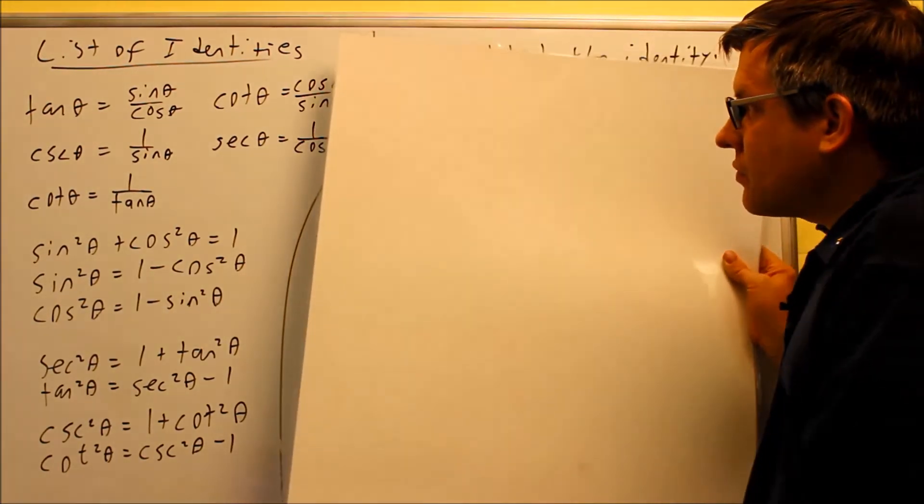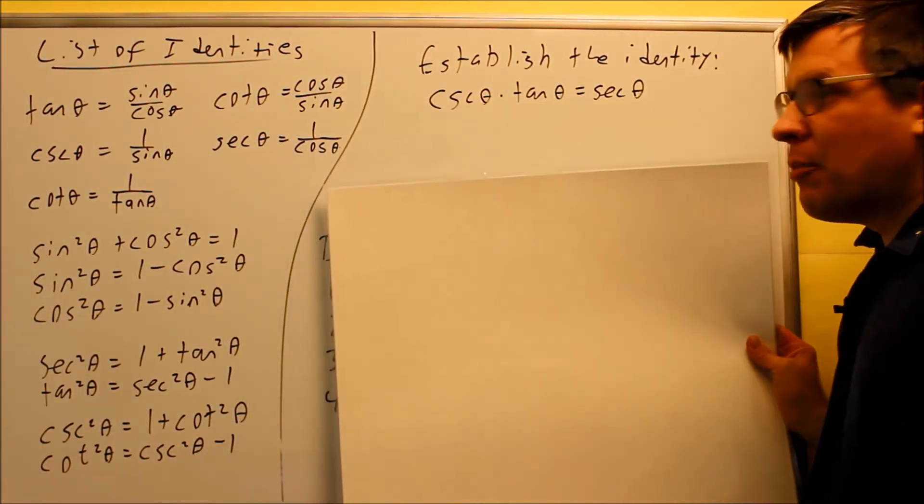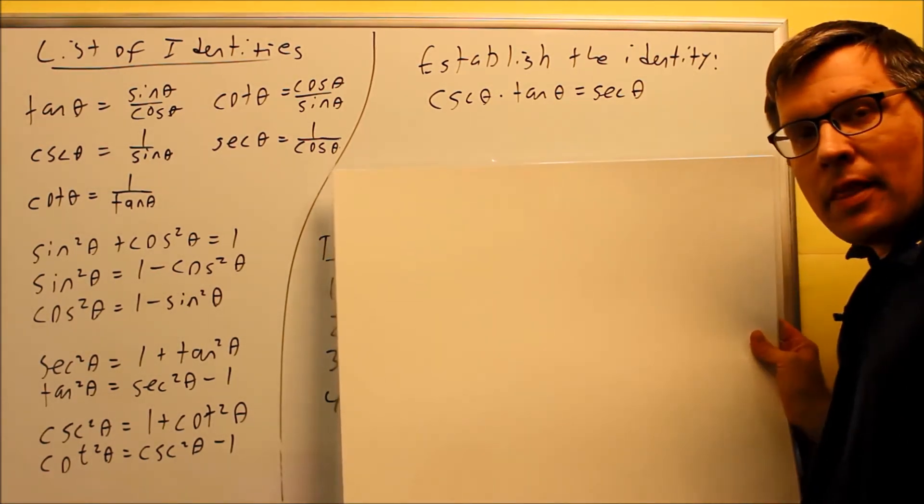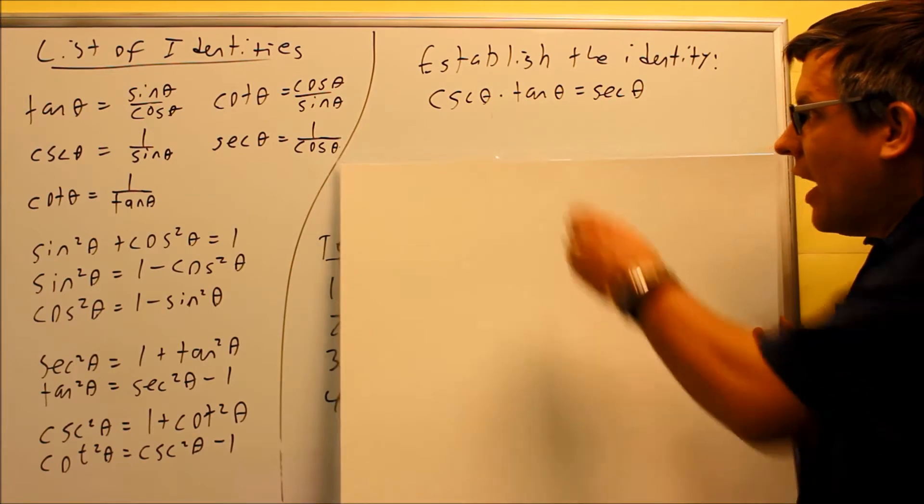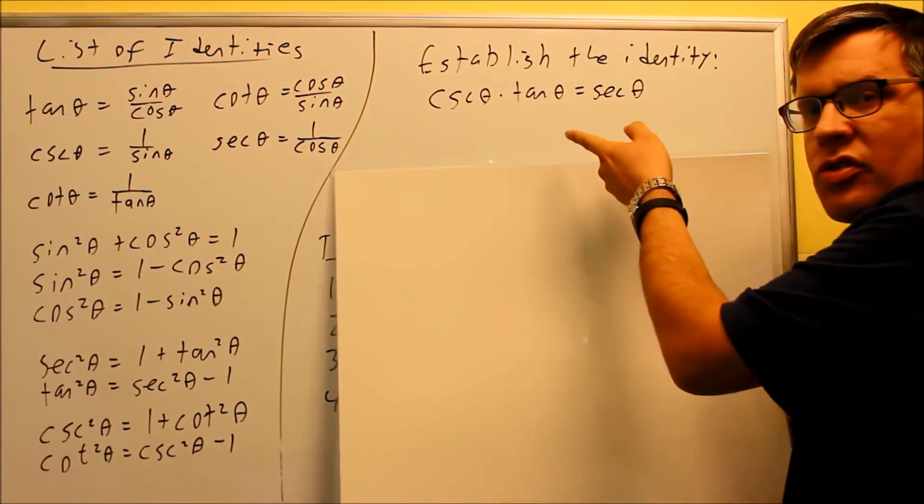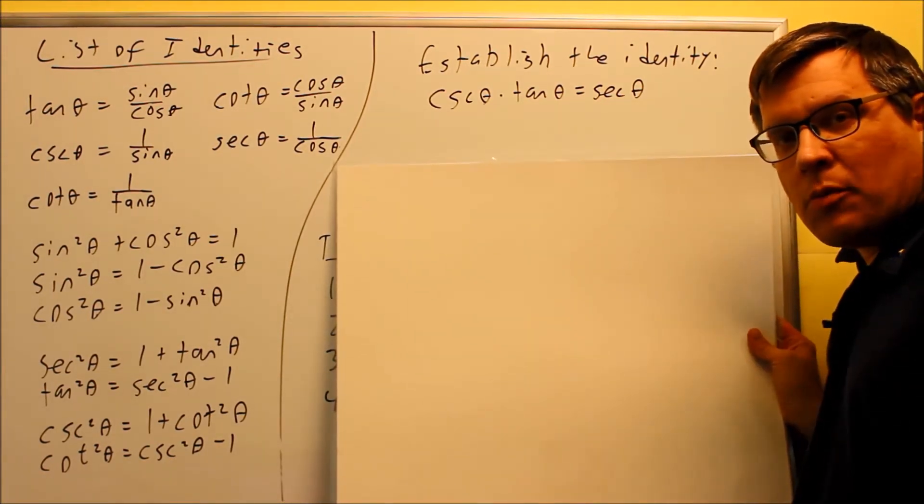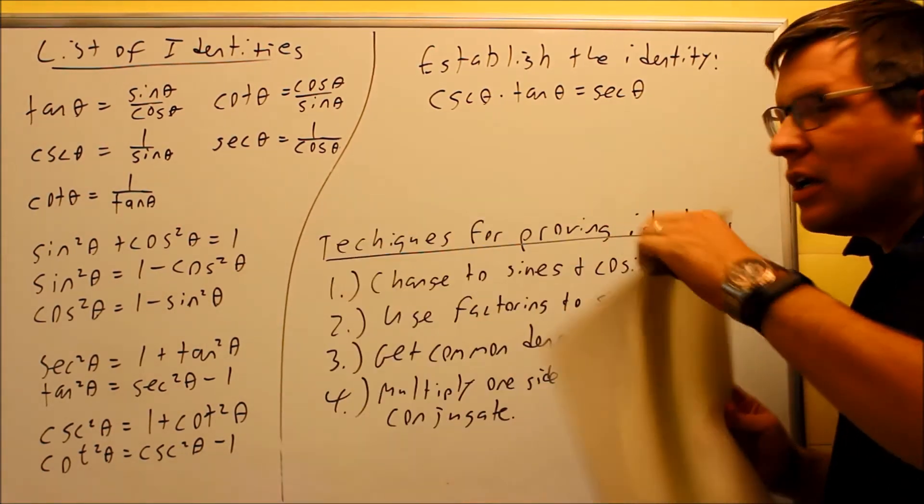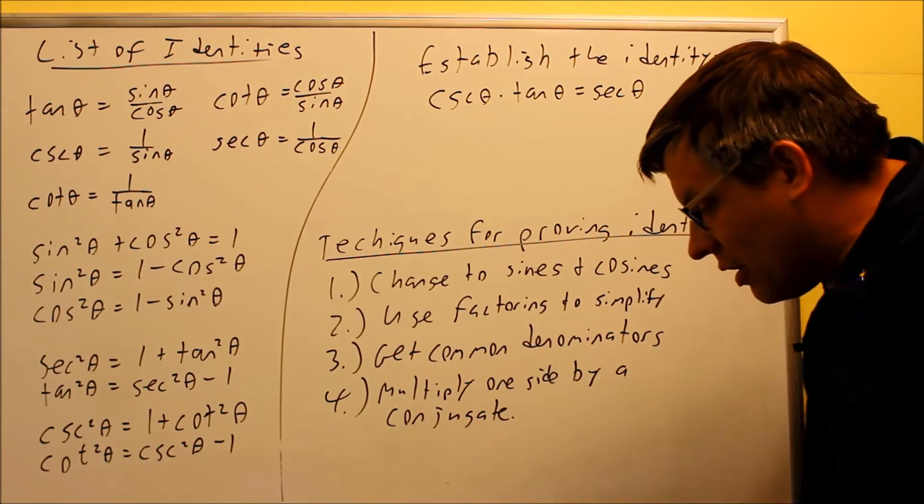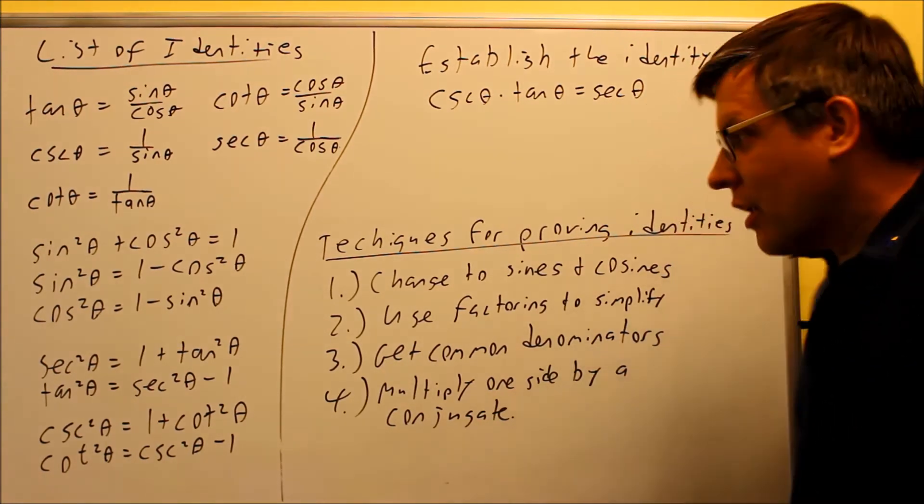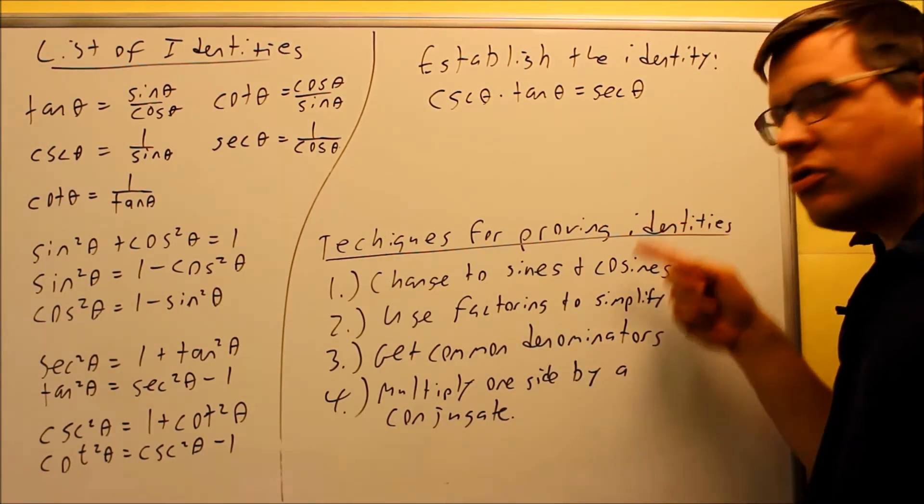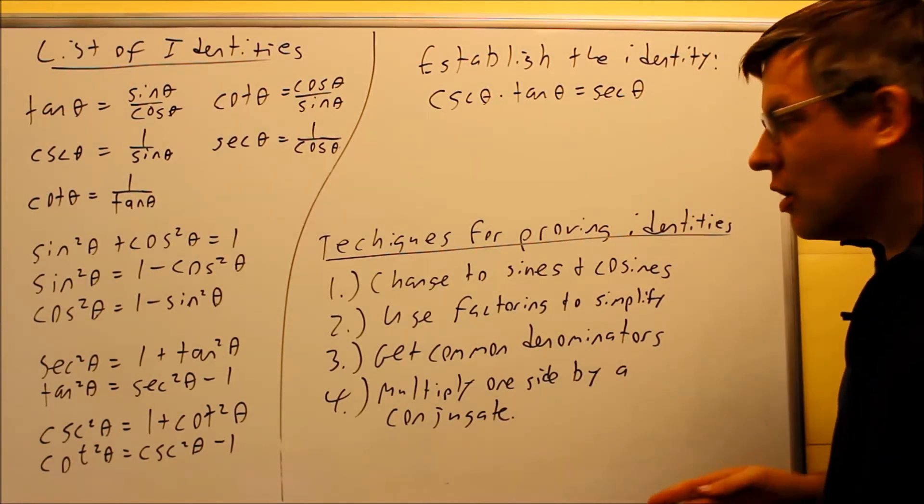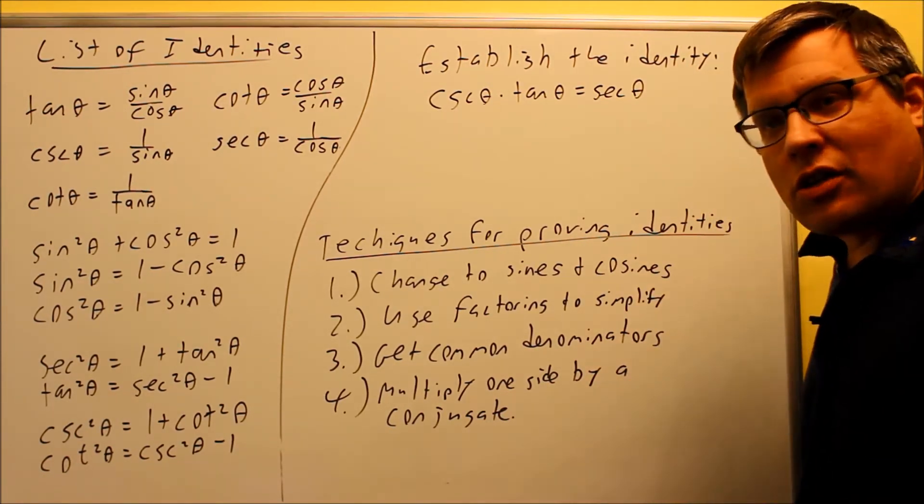So now, the type of problem that you're going to see in this section is one like this. It'll say establish the identity, and we basically have something that looks like this. What you want to do with these problems is you want to show that one side equals the other side. Now, in order to accomplish that, I have a list of techniques here that you want to take a look at. These are techniques that you can do so as you're working out a problem like this where you establish the identity.